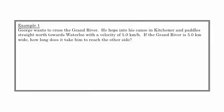So here we go. We've got example one. This is George. He wants to cross the Grand River. He hops into his canoe and he paddles straight north towards Waterloo with a velocity of 5 kilometers per hour. He's a pretty good canoer. If the Grand River is 5 kilometers wide, how long does it take him to reach the other side? So there's no current. There's nothing going on here. Here's a little diagram. So here's Kitchener. And across the river, there's Waterloo. And so there's the canoe that he hops in, 5 kilometers per hour, and of course the distance is 5 kilometers.